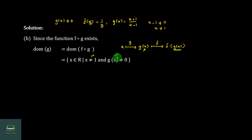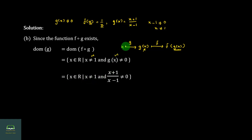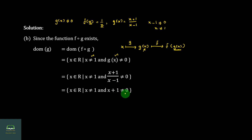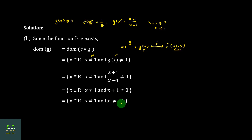So GR is 0. We have done that. The set of s belonging to R, such that s not equal to 1, and GR is s plus 1 by s minus 1, not equal to 0. Searching: the set of s belonging to R, s not equal to 1 and s plus 1 not equal to 0. Then we will have s not equal to minus 1. The set of s belonging to R, such that s not equal to 1 and s not equal to minus 1.